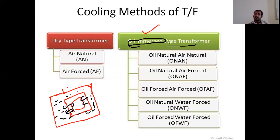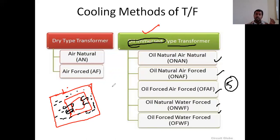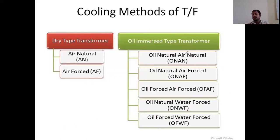All five methods — one, two, three, four, five — are based on oil immersive type, meaning the core and winding are placed inside oil, and the oil is placed in the tank of the transformer. Based on capacity, the oil immersive type is classified. The first is ONAN — Oil Natural, Air Natural. In oil natural air natural, naturally oil flows to the radiators and back.